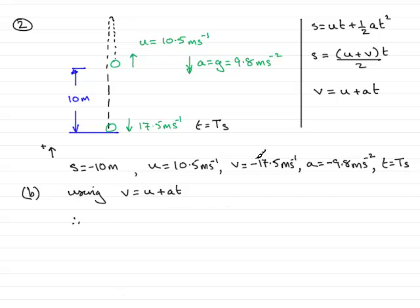Well, v we know is downwards, so again, you've got your plus directions upwards. So, be careful all the time with these directions. So, v is minus 17.5. Equals u, which we now know is 10.5, plus a, so that's minus 9.8, times t. And t is now big T.